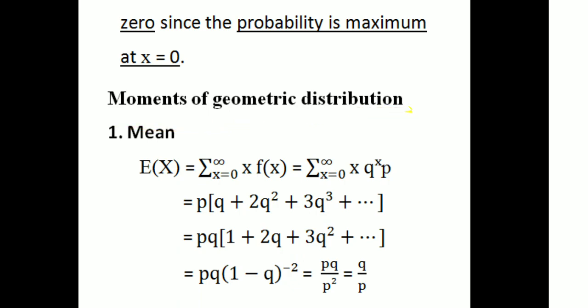Next, the moments of the geometric distribution — that means the mean, variance, and moment generating function. To calculate the mean, E[X] = summation from x = 0 to infinity of x · f(x), because our random variables are discrete. So, summation x = 0 to infinity of x · q^x · p.